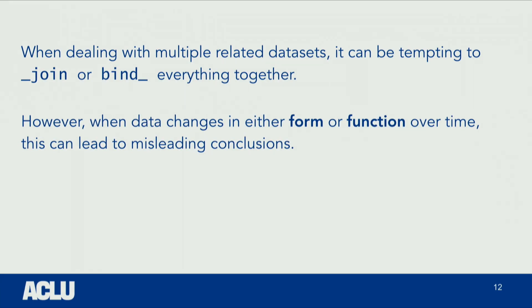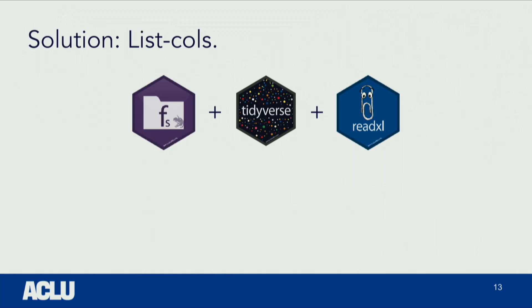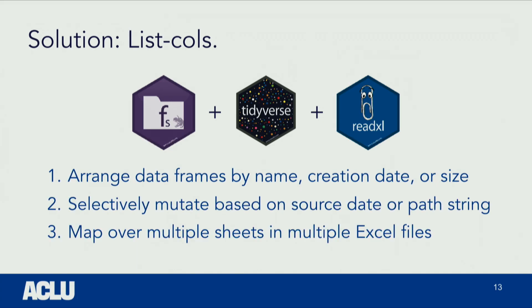One of the reasons it wasn't possible was because some of the data was simply wrong. We couldn't just throw out the data we knew to be bad — we had to follow up with the government to say, what is going on here? In this case, the data source is just as important as the data itself. So the first step was to get everything into a nice rectangle with list columns, using the fs package, which includes metadata about a given file. We could arrange those by size or by date, mutate over rows based on path strings, and map over all of those rows to read the data in.